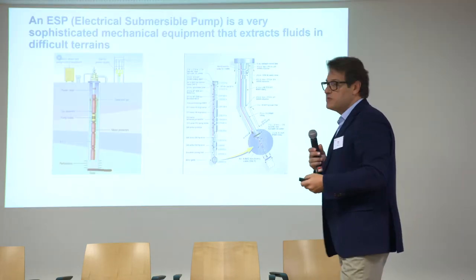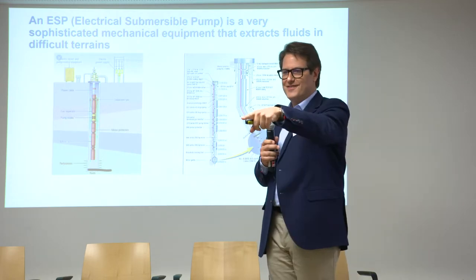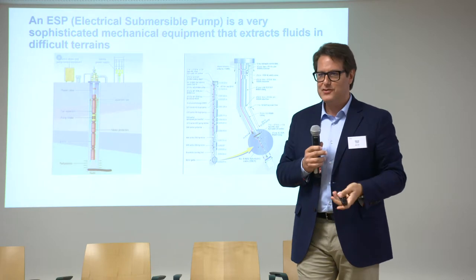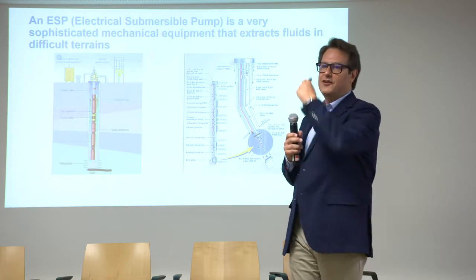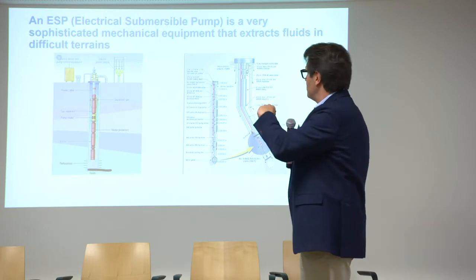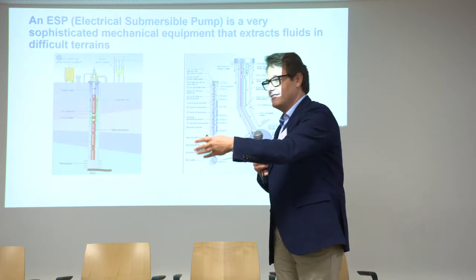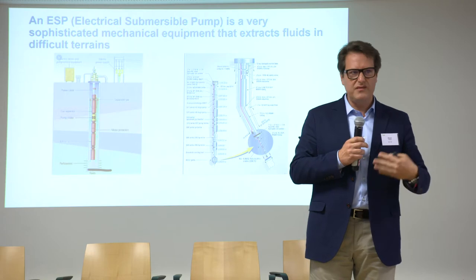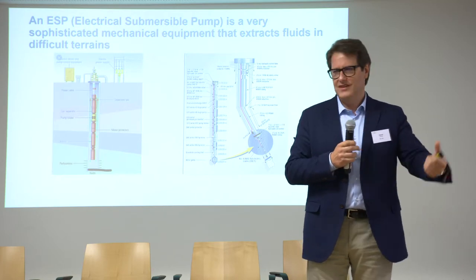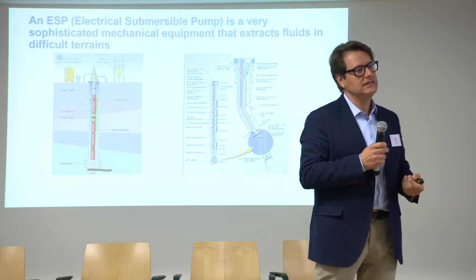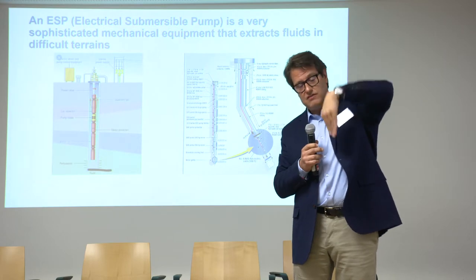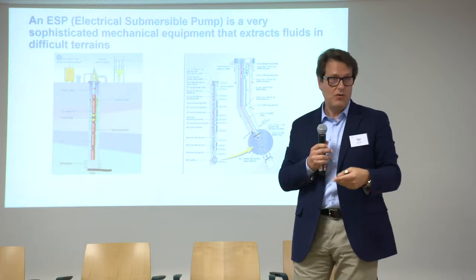ESPs — electrical submersible pumps — are a critical piece of equipment in oil and gas. A very sophisticated piece of equipment that basically does very difficult things in very difficult conditions, extracting all kinds of fluids from underground terrains — gases, water, crude oil — pumping it up to a platform where it's processed. Sometimes it has to take angles, and you know what happens when you have angles: things get complicated. Imagine a platform 150 kilometers offshore in the Arctic Sea.